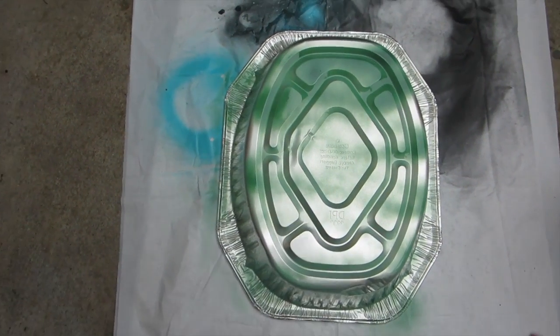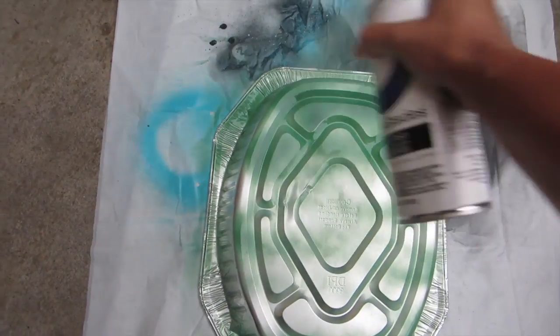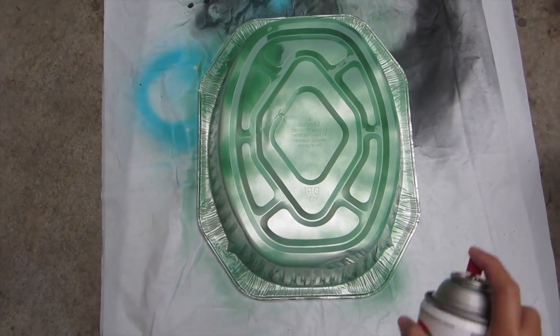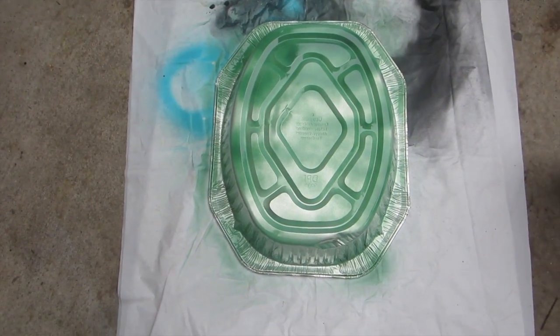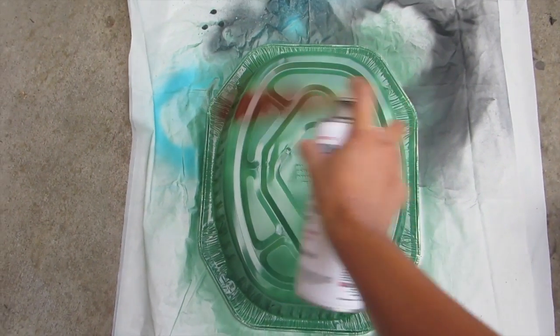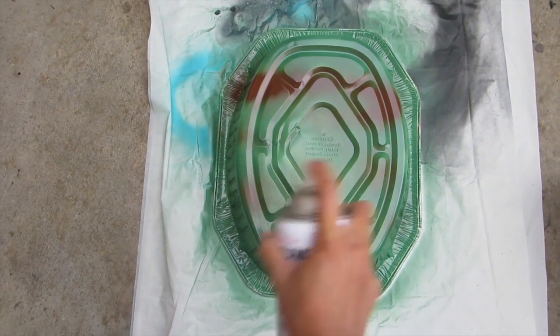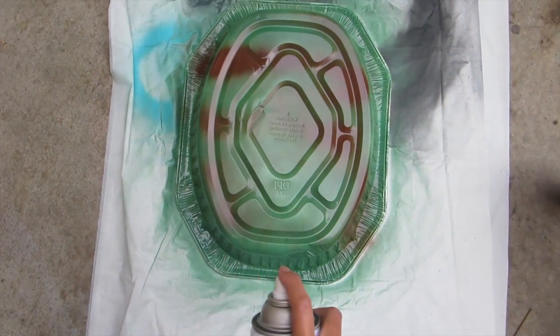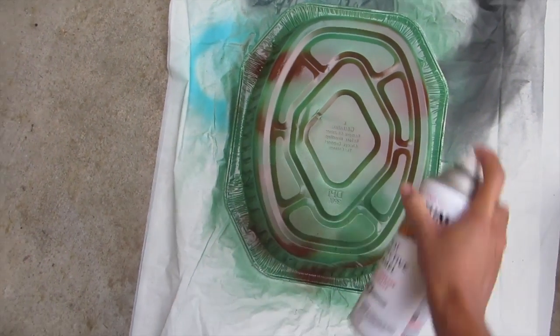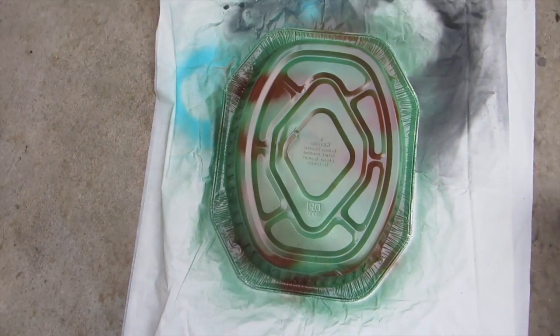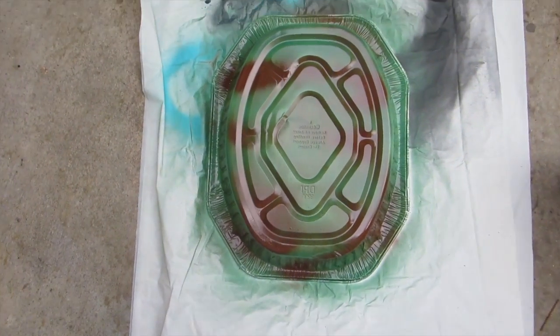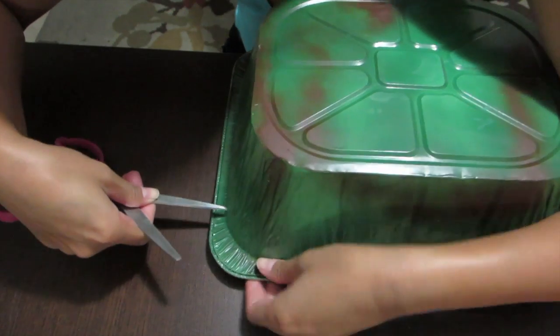We are gonna start off by spray painting our foil pan and this I got from the Dollar Tree. The spray painting can is from Walmart, it's one of the cheap ones. So you're gonna need three or four coats for that, let it dry, and then I'm also putting brown spray paint just to give it some rustic appeal to it.